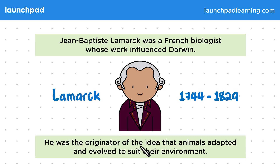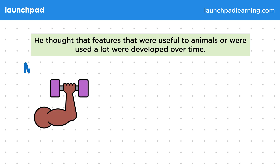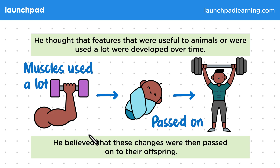He was the originator of the idea that animals adapted and evolved to suit their environments. He thought that features that were useful to animals, or were used a lot, were developed over time. For example, lifting weights increases a person's muscle mass. As a result, this person's offspring would also have increased muscle mass. He believed that these changes were then passed on to their offspring.